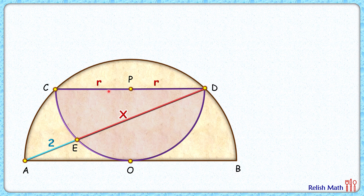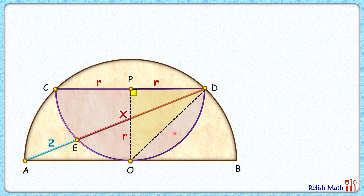P is the center of this purple semicircle. CD is also a chord for the brown semicircle, and we know that the perpendicular bisector of a chord passes through the center of the circle. Now PO length is also r centimeters. Let's join DO here. In this yellow right angle triangle, applying Pythagoras theorem, OD is the hypotenuse, so we get OD length as r times root 2.